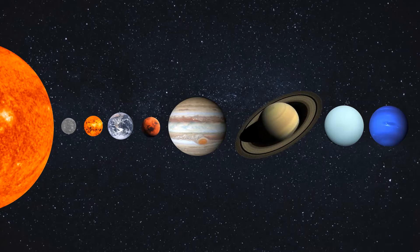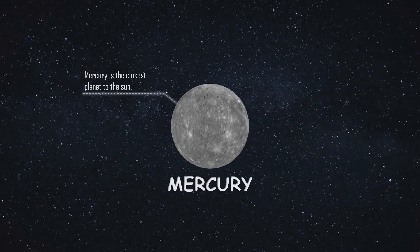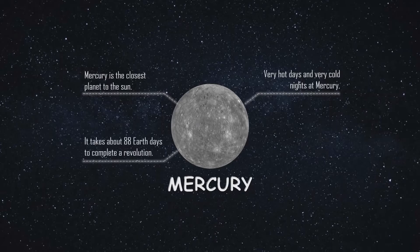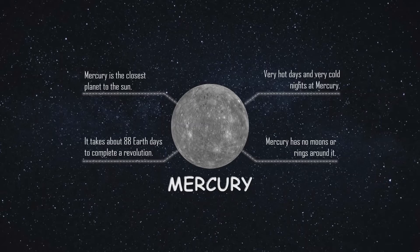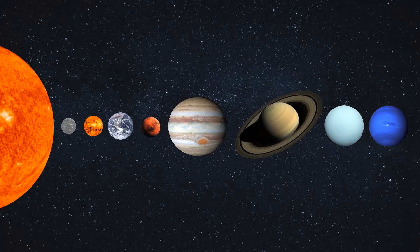The first and closest planet to the sun is Mercury. Because it is so close to the sun, it has very hot days and very cold nights. It takes about 88 days to complete a revolution, compared to Earth's 365 days — it takes less time because it's closer to the sun. Mercury has no moons or rings around it.